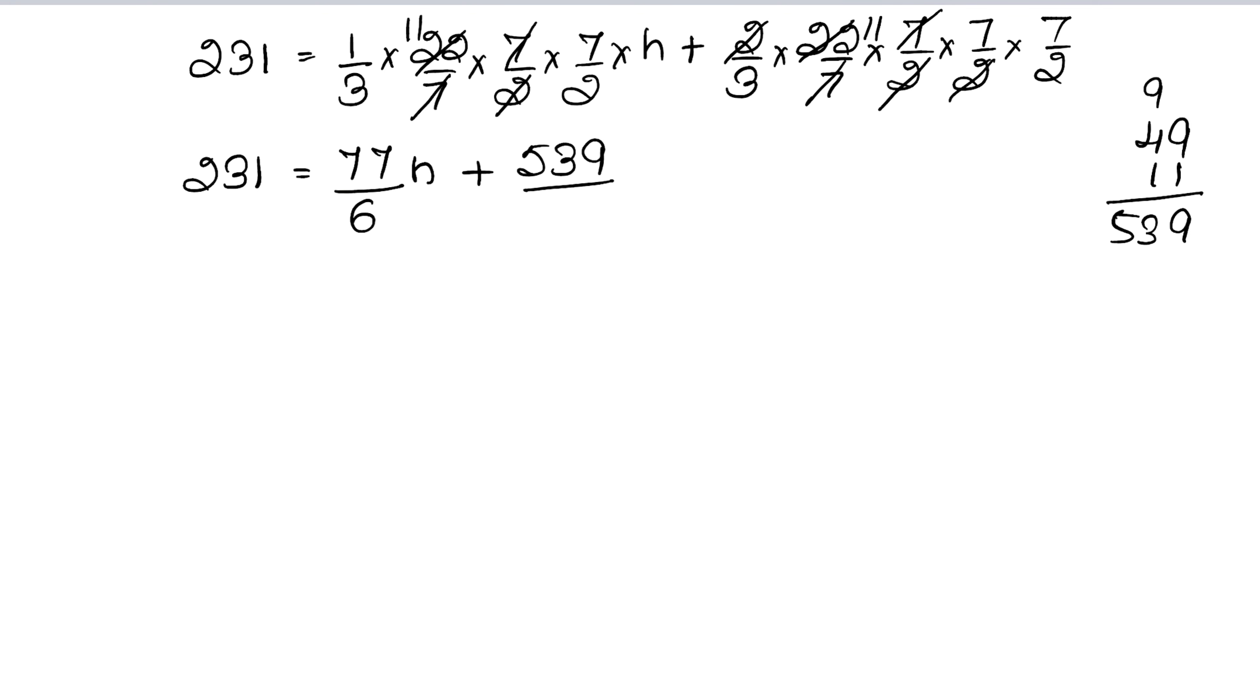539 upon 6. So 231 equals to LCM 6, so this is 77h plus 539 upon 6. Moving to the other side, 231 into 6 equals to 77h plus 539.